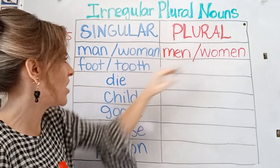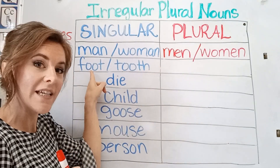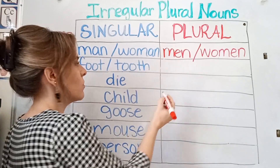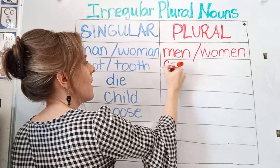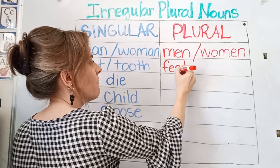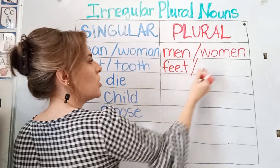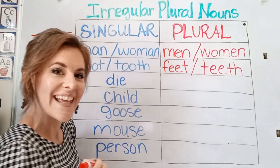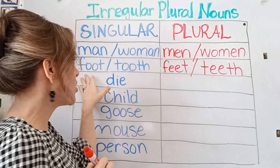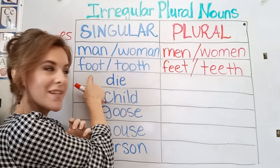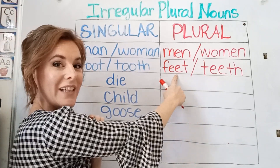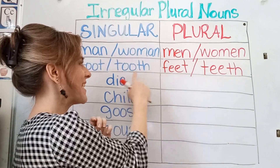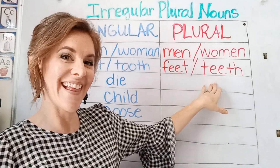We are changing the word. Now here we have foot and tooth. So foot becomes feet and tooth becomes teeth. We are changing the double O's to double E's. So foot → feet, tooth → teeth.